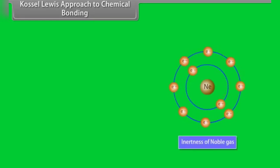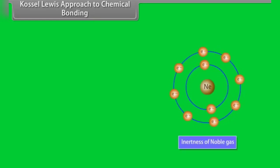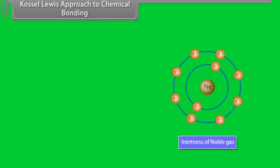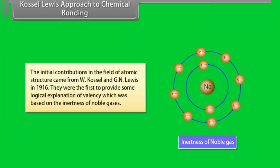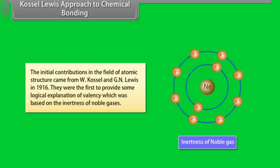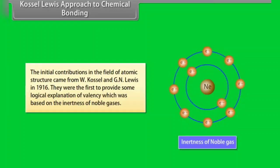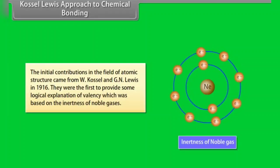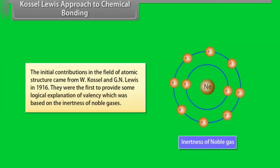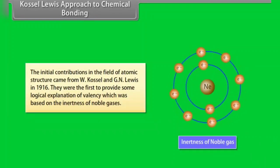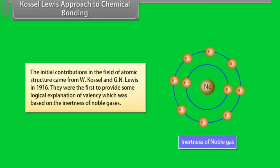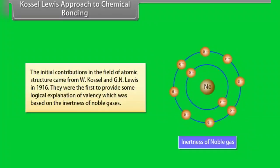The developments in the field of atomic structure provided foundations for various theories of valency. The initial contributions in this field came from W. Kossel and G. N. Lewis in 1916. They were the first to provide some logical explanation of valency, which was based on the inertness of noble gases.